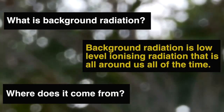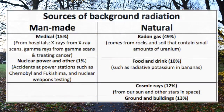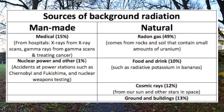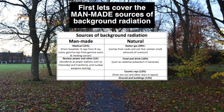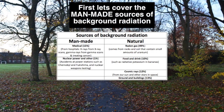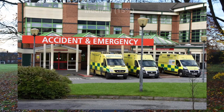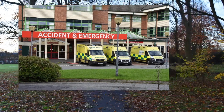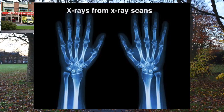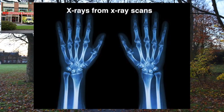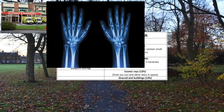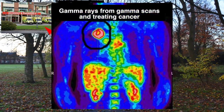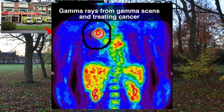Where does it come from? Some background radiation is man-made and some is natural. First, let's cover the man-made sources. Medical, from hospitals, accounts for 15%. This comes from X-ray scans and gamma rays used in gamma scans and treating cancer.